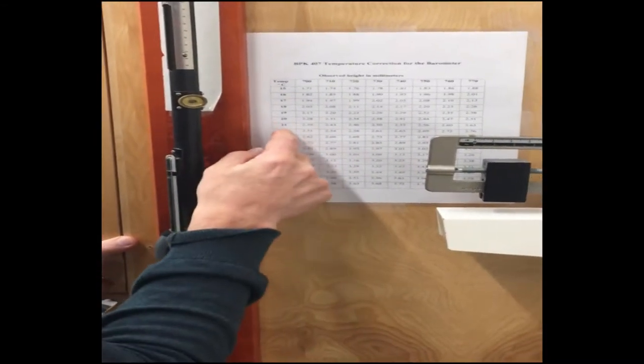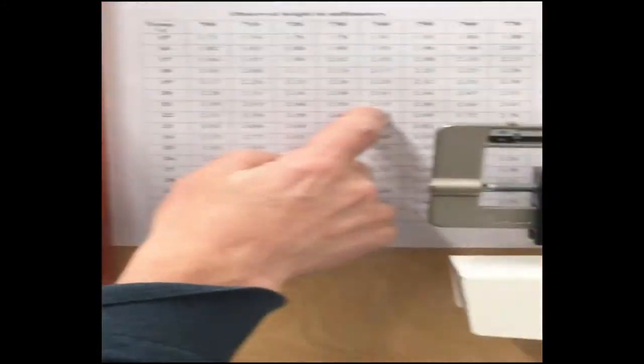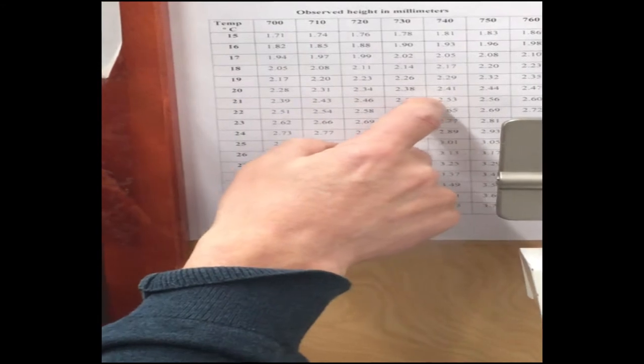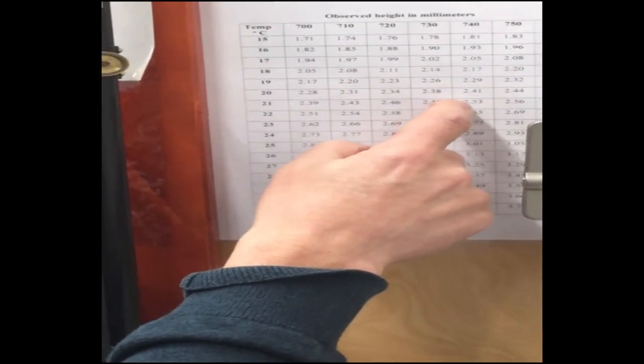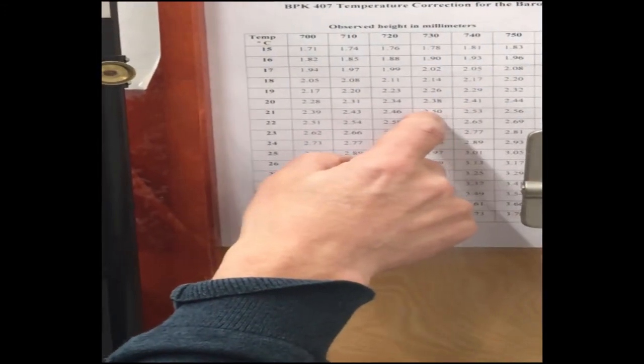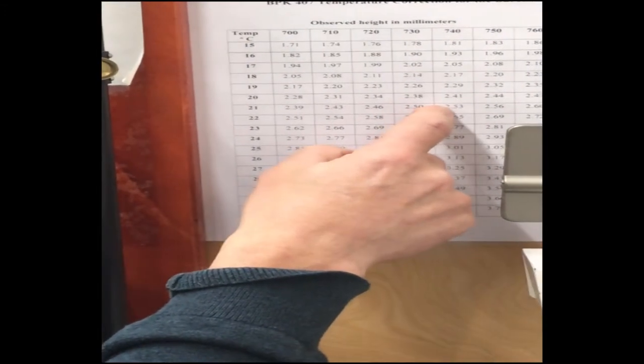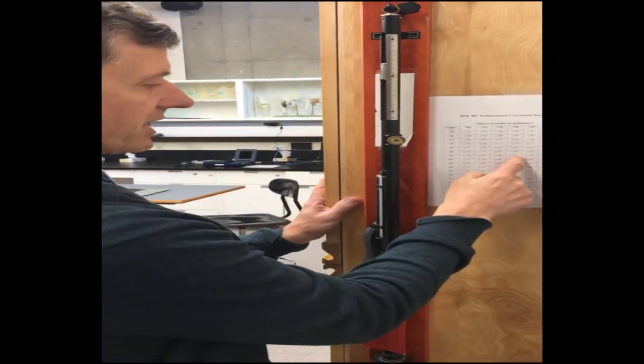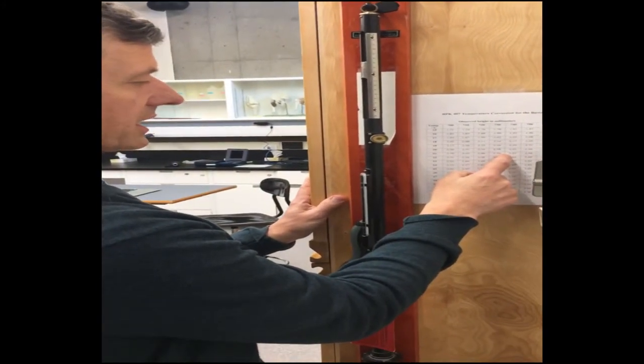I know that the room temperature right now is 21 degrees Celsius. I know that we're just below 740 millimeters of mercury - we're between 730 and 740 millimeters of mercury. If I was to interpolate, the number would probably be about 2.52. This is only good to one decimal point, so when you take your correction factor you only want that to be to one decimal point.